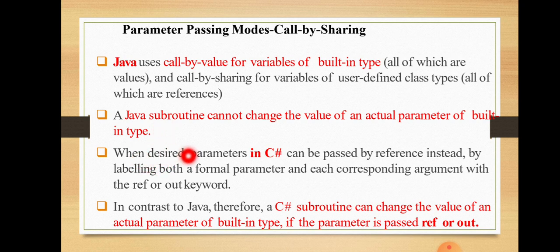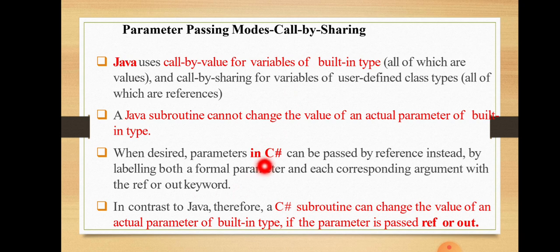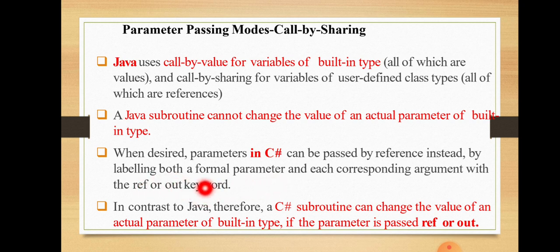In C sharp, parameters can be passed by reference instead of by value by labeling both the formal parameter and each corresponding argument with the 'ref' or 'out' keyword. C sharp uses call by value by default, but if call by reference is desired, the keyword 'out' or 'ref' must be used. In contrast to Java, a C sharp subroutine can change the value of an actual parameter of a built-in data type if the parameter is passed with 'ref' or 'out'.